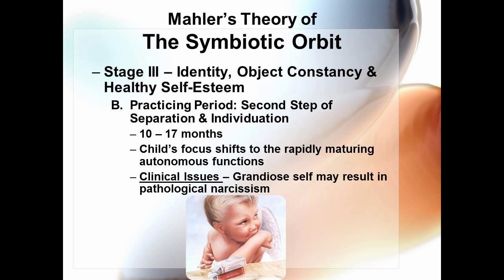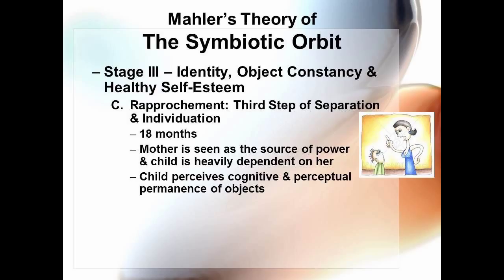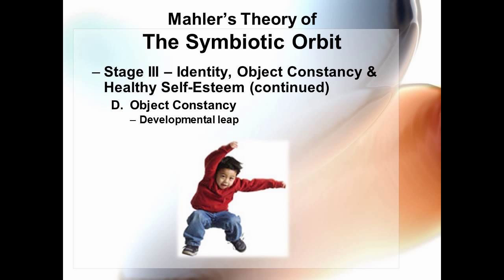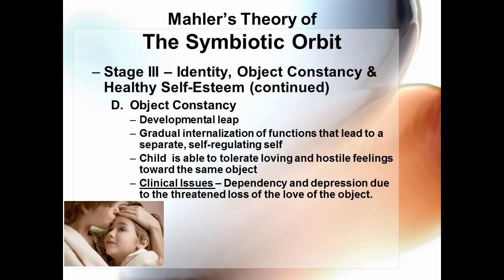The third part of stage three is called rapprochement, which occurs around 18 months. The child begins to see the mother as the source of power and that he or she is heavily dependent on her. The child also begins to perceive the cognitive and perceptual permanence of objects. The fourth step is object constancy, considered a developmental leap in which a gradual internalization of functions occurs, leading to a separate, self-regulating self. The child is able to tolerate loving and hostile feelings towards the same object. Clinical issues include dependency and depression due to the threatened loss of the love of the object.